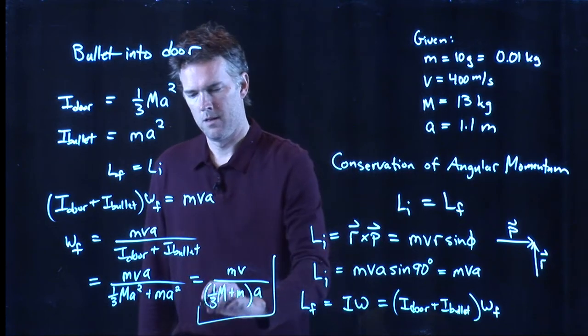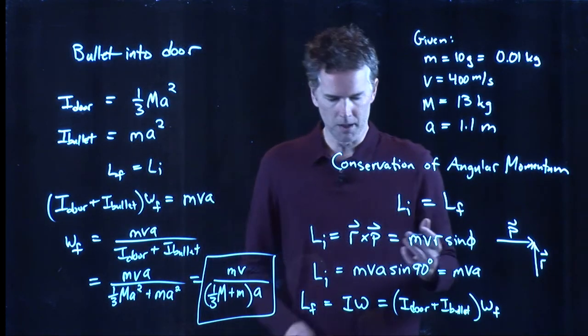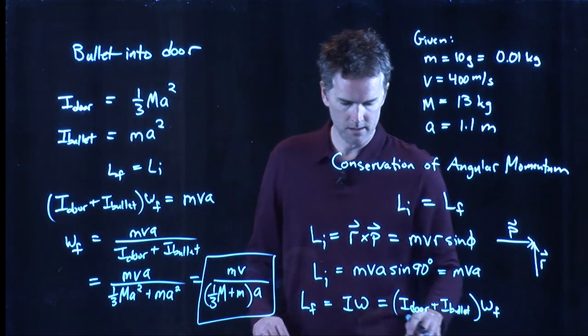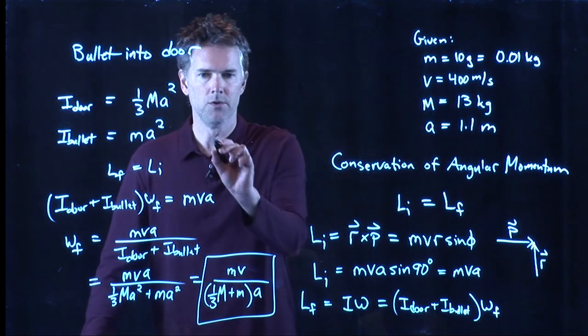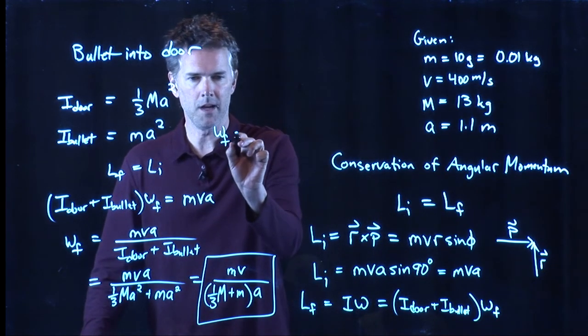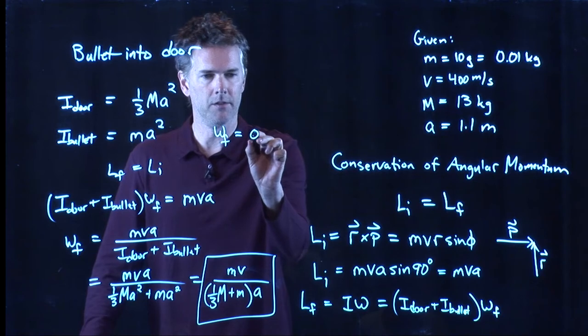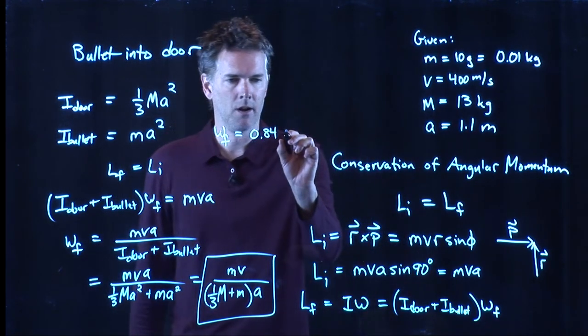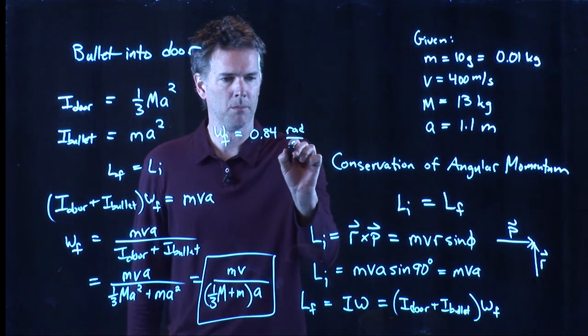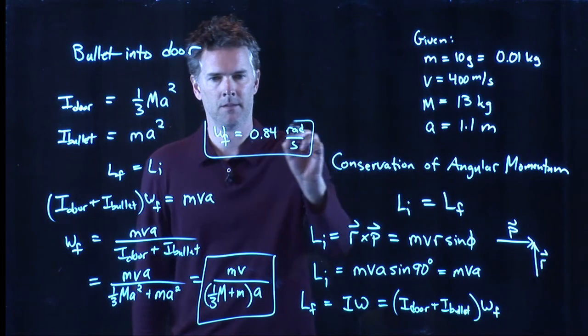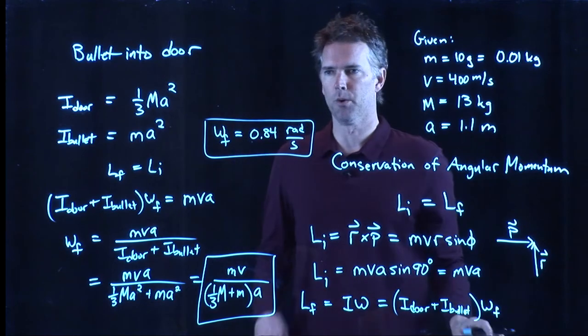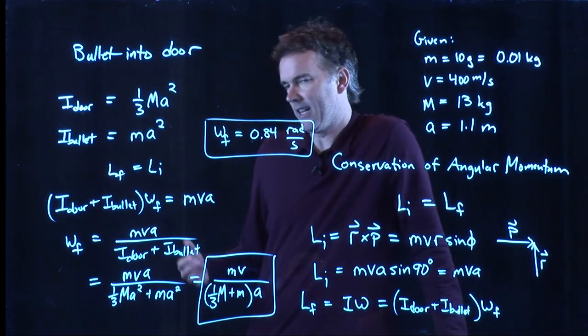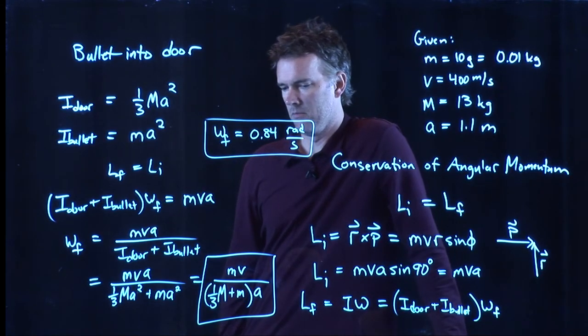And now you have all those numbers. And if you take those numbers and plug them in and you want to double check what I got, you should end up with omega final is 0.84. And the units, of course, are radians per second. This is how fast that door is going to rotate. It's not that fast, but it's a reasonable number.